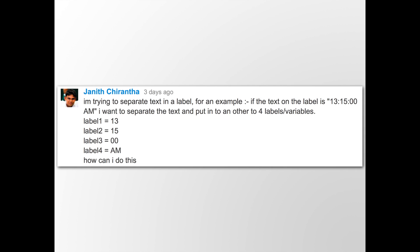In this episode of Viewer Questions, Jenice Chuantha asks a question about assigning text to separate labels. The text passed through looks like some sort of timestamp. He wants to put four labels and separate each section of the string into a different label, and he asks how can I do this. So let's get into it.